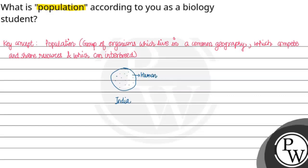तो यह common geography में रह रहे हैं, group of organisms है, share करते resources, compete करते हैं resources के लिए, और interbreed कर सकते हैं. तो उन group of organisms को बोला जाता है population. So यह India की population है. Hope you understood the solution, thank you!